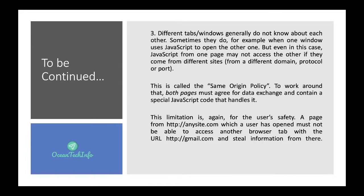The third limitation is that different tabs or windows generally do not know about each other. Even when one window uses JavaScript to open another, JavaScript from one page may not access another if they come from different sites — this is called the same-origin policy. For example, a page from xyz.com opened by a user must not be able to access another browser tab with gmail.com and steal information from there.